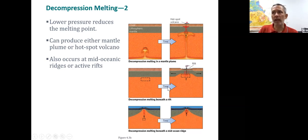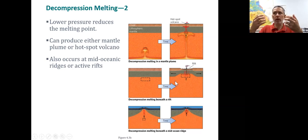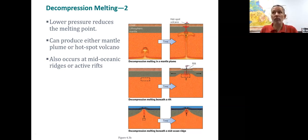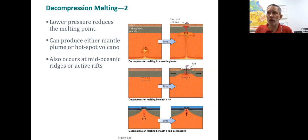In Africa right now, we've got the African rift zone, where these rocks are pulling apart and heat is rising up. As a result, that decompression is going to cause melting. This also occurs at the mid-ocean ridge.